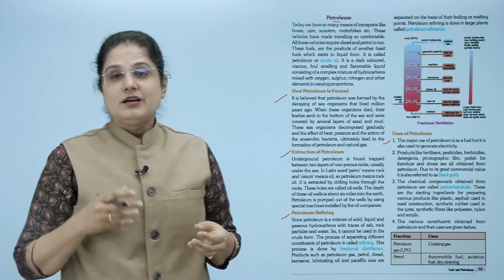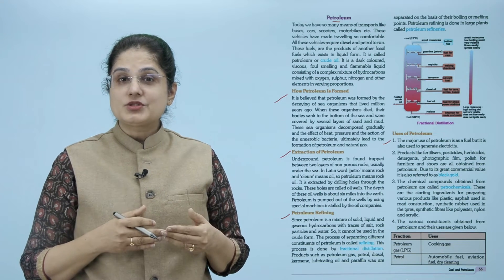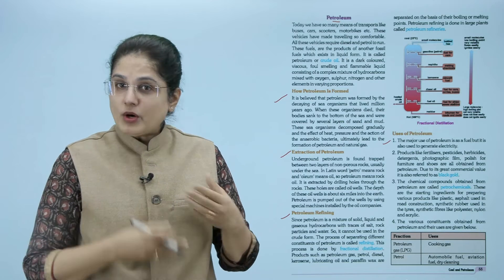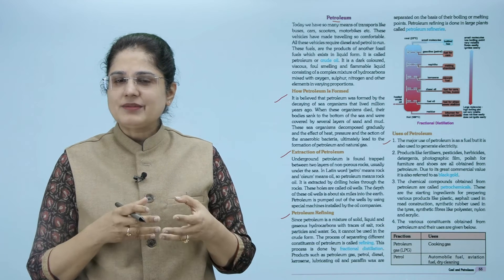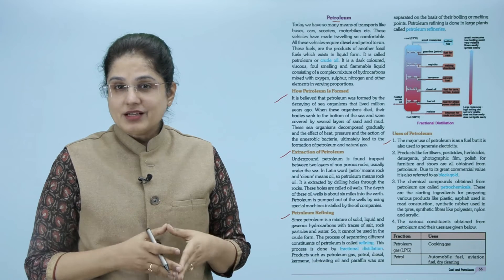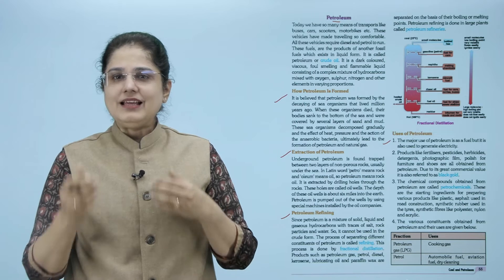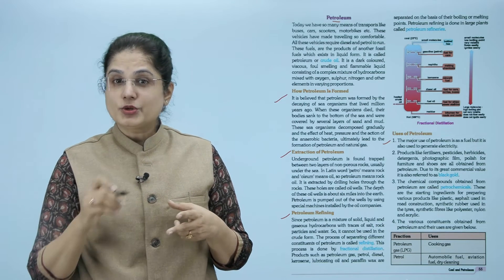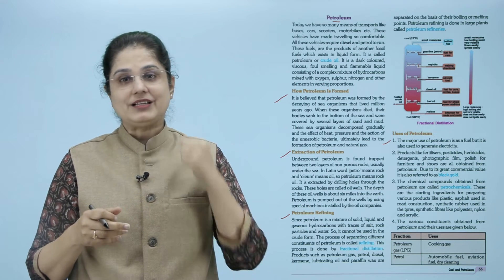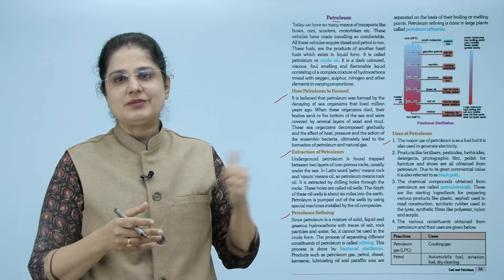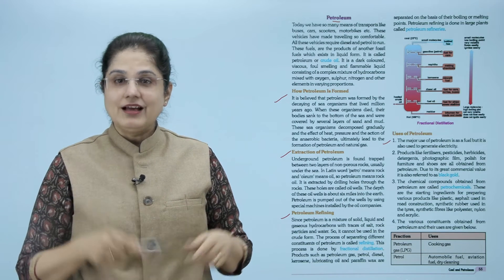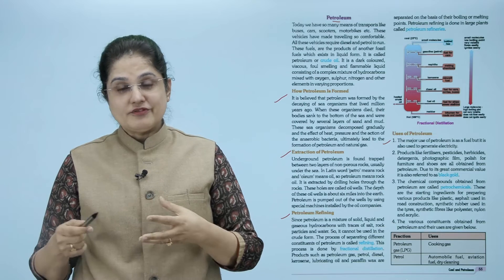The uses of petroleum: as a fuel, for electricity generation, and for making fertilizers, pesticides, herbicides, detergents, photographic film, furniture polish, and shoe polish। इसकी commercial value बहुत ज़्यादा है इसलिए इसको black gold भी कहा जाता है। जो chemical compounds हमें petroleum से मिलते हैं उन्हें petrochemicals कहते हैं। इनसे बड़े सारे products बनते हैं जैसे plastic, asphalt जो road construction में काम आता है, synthetic rubber जैसे tires, और synthetic fibers जैसे polyester, nylon और acrylic। Petroleum gas - LPG - use होता है as cooking gas; petrol use होता है as automobile fuel, aviation fuel और dry cleaning के लिए।